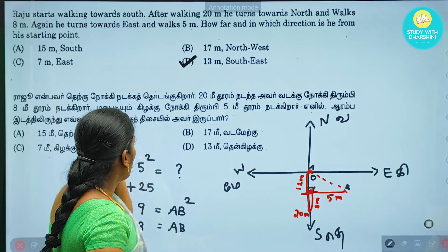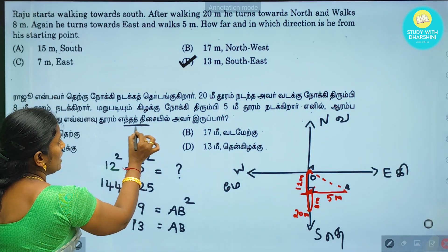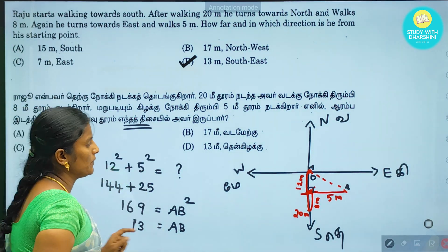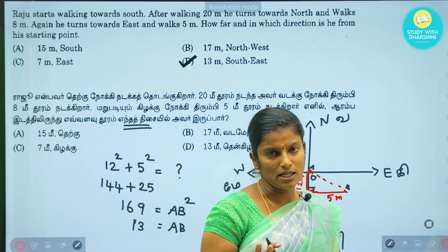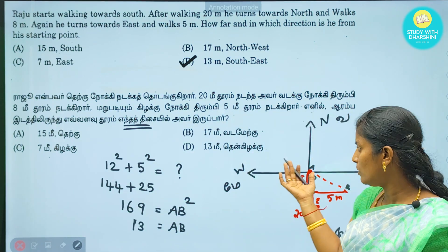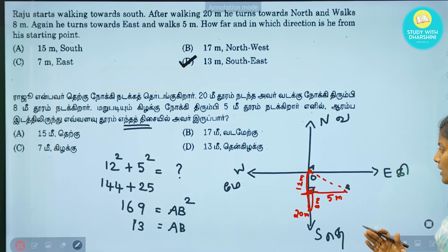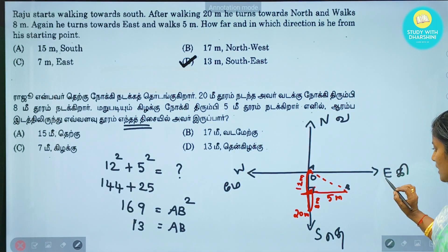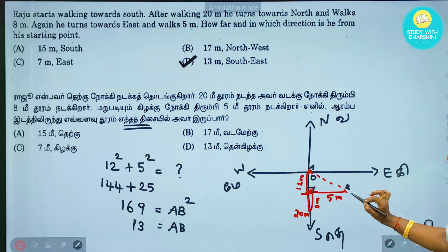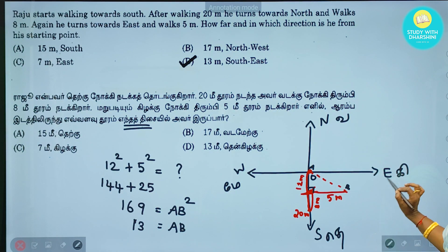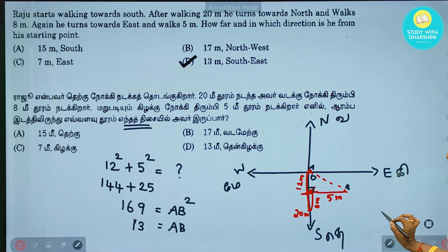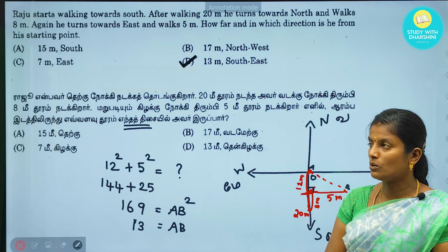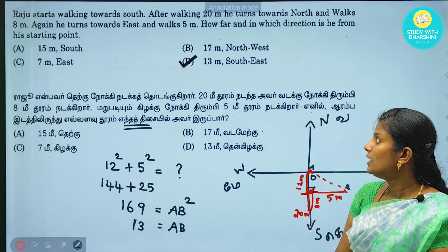So you can see this in between. The direction is southeast, and they will be able to reach 13 meters. So we have the answer: option D.